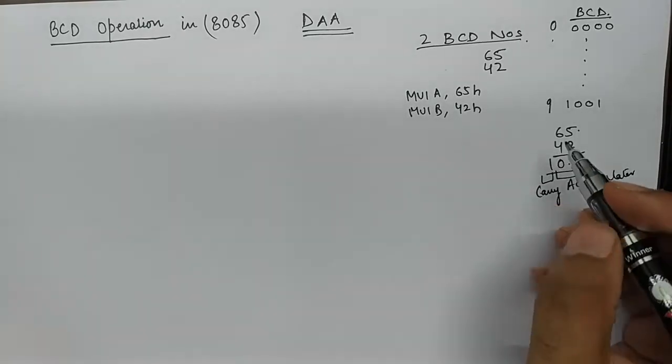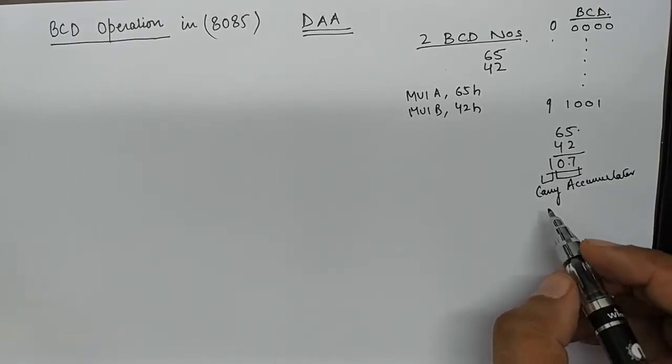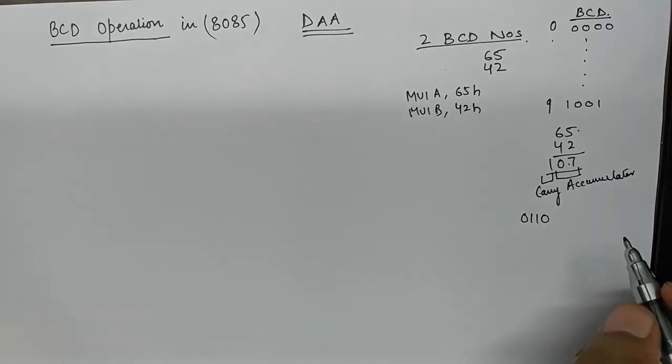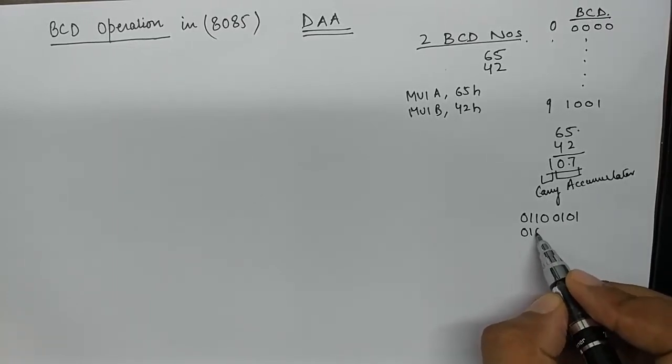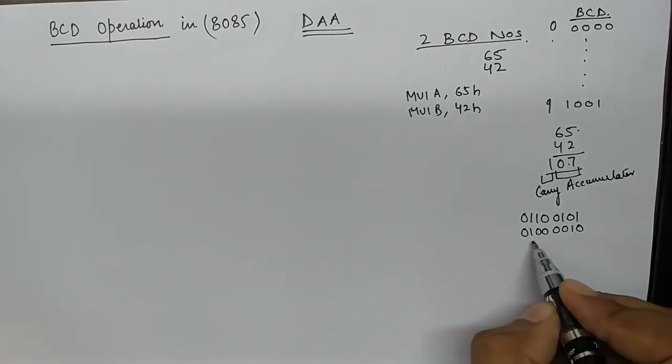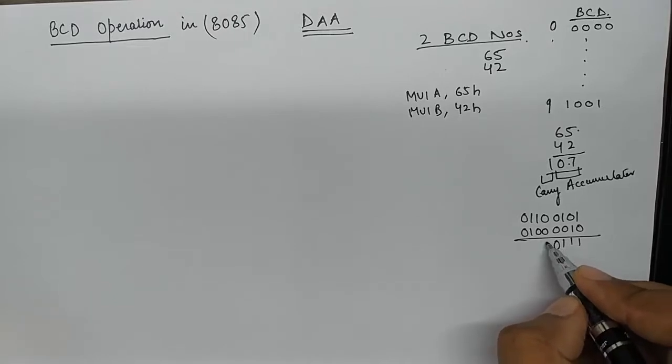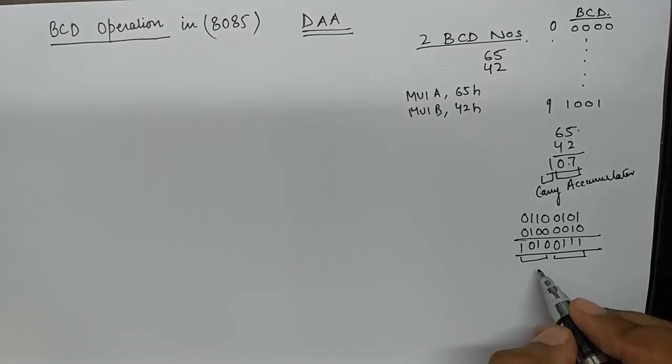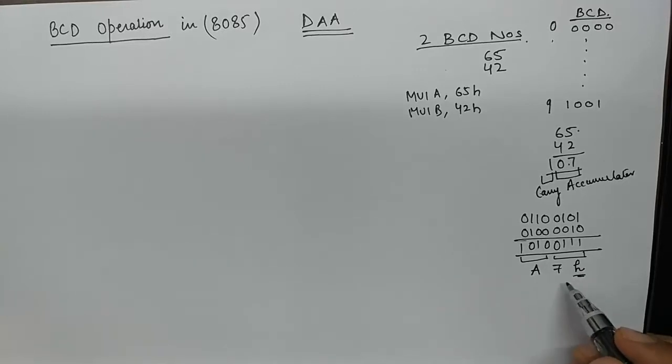But that is what does not happen in microprocessors. If you look into the exact thing which is happening in the microprocessor, it will save 65 as 0110 and 5 as 0101. Similarly it will save 4 like this and 2 as this. When it goes to add these two numbers, it will result in a number which is A7H. Now A7H, although the result itself is correct - A is 10 and 7 is 7.